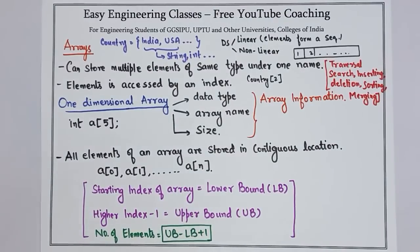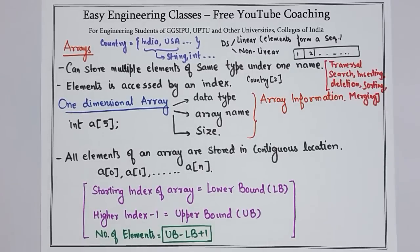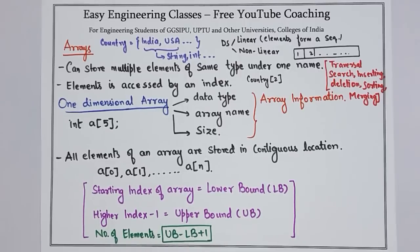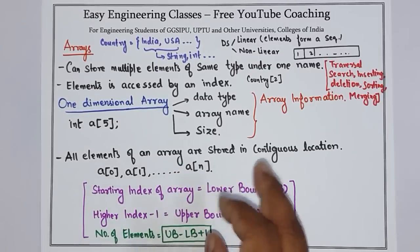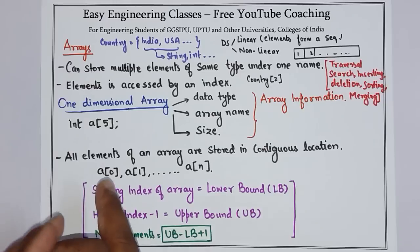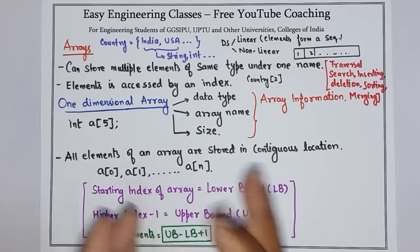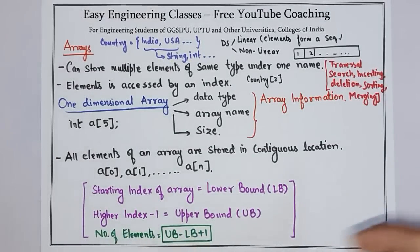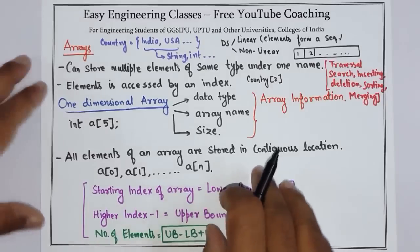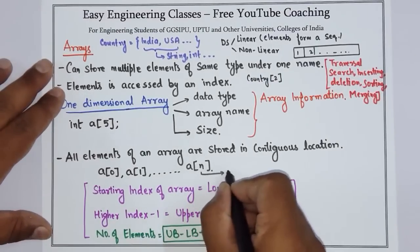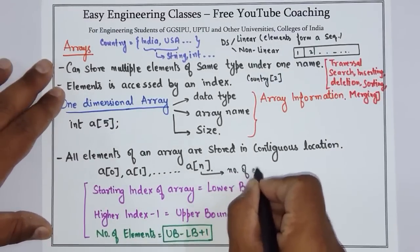Now let's start with one-dimensional array, also called a linear array. One-dimensional or linear arrays are a list of a finite number of n homogenous data elements. All the elements of an array are stored in contiguous locations, from a[0] to a[n], where n is the number of elements in the array.